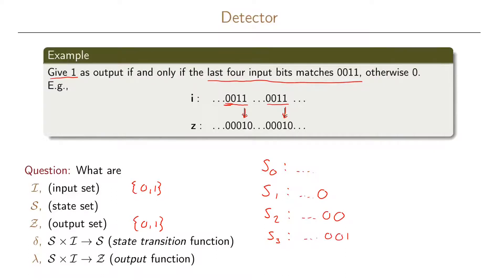State S3 similarly represents that we have now seen zero zero one. You might think we want an S4 state for having received zero zero one one, but that is not the case. After receiving one more input bit in state S3, we either go back to S0 if we received a one, or go to S1 if we received a zero. So we only need four states to solve this problem.